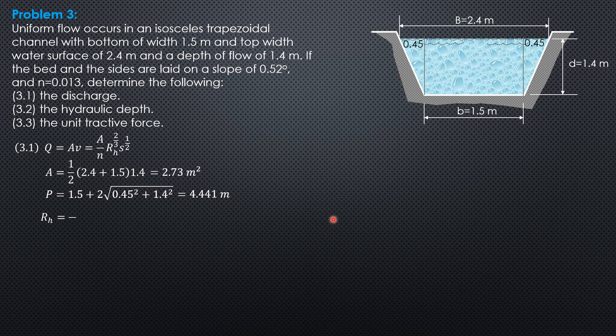The hydraulic radius, therefore, is area 2.73 over 4.441, so that is 0.6147 meters. The slope is tangent of 0.52 degrees, so tangent of 0.52 degrees is 0.009076.